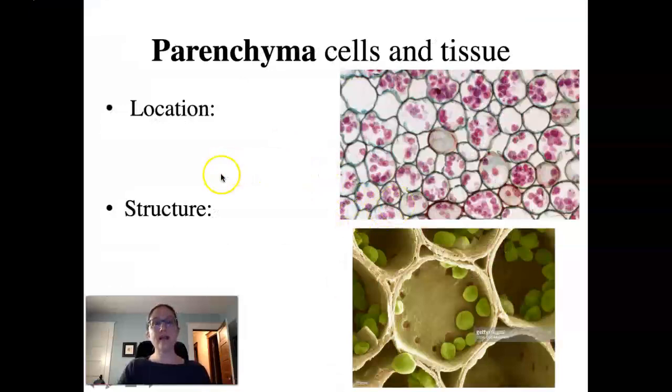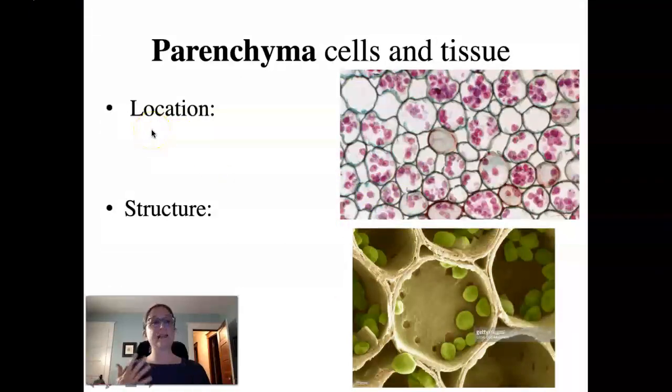I'm going to spend the rest of the time talking about parenchyma tissues. So parenchyma is highly variable and it is located throughout the plant. It's in leaves, stems, and roots. It makes up most of the inner part of the plant. Its structure is highly variable as well, but there are some things in common with all parenchyma cells, which make up parenchyma tissue. Parenchyma cells are alive at maturity, which means they have only primary cell walls.